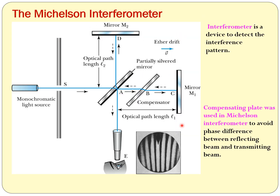This is the Michelson interferometer. Michelson used two mirrors M1 and M2 in perpendicular directions. A monochromatic light source was used, and a partially silvered mirror or glass plate was used which can work both as a mirror and as a transparent plate. Some part of the light is reflected to mirror M2 and some part is transmitted to mirror M1. For the reflecting part covering extra distance, a compensatory plate of similar thickness was used.